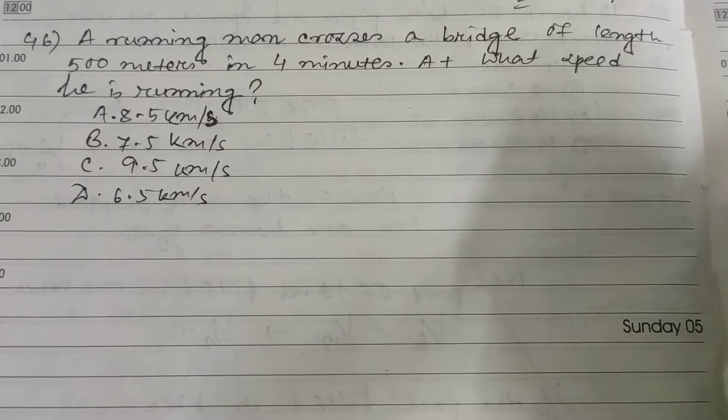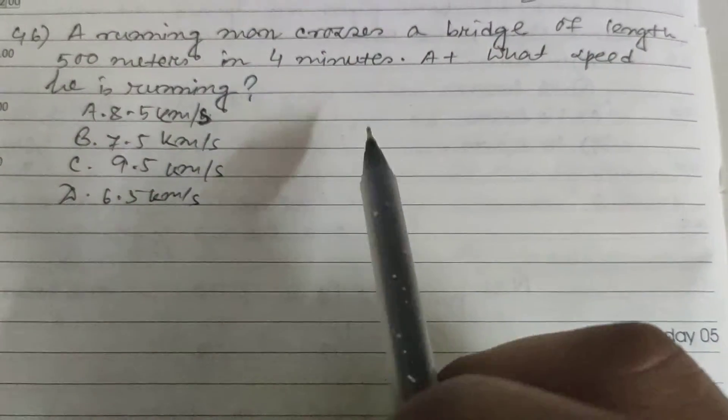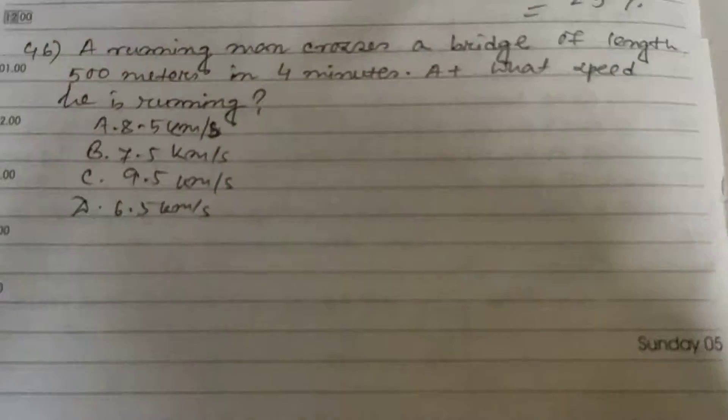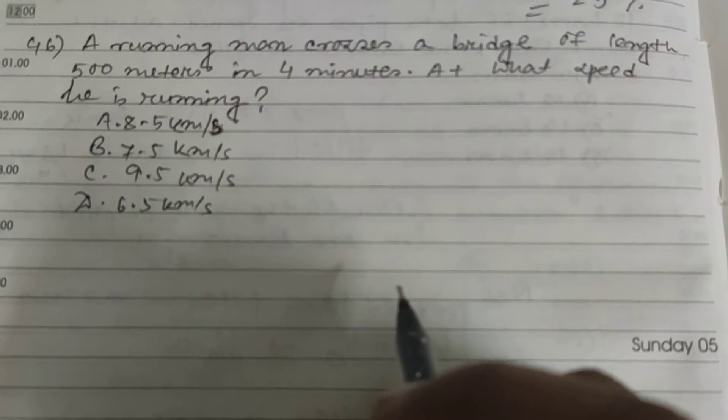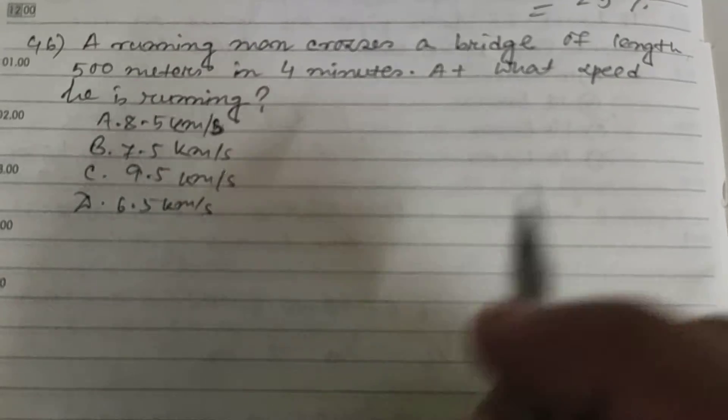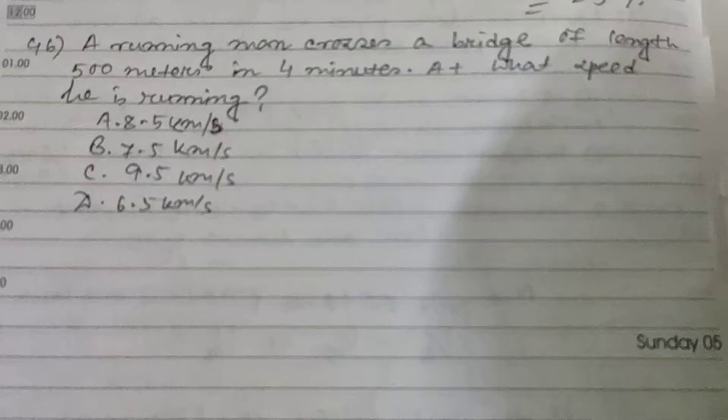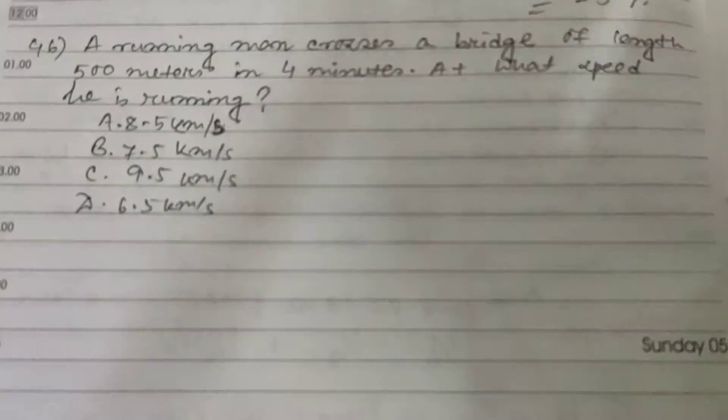Hi friends and students, this is question number 46. A running man crosses a bridge of length 500 meters in 4 minutes. At what speed is he running?